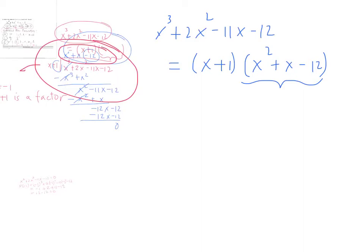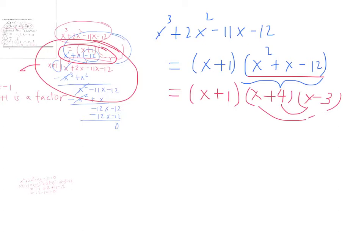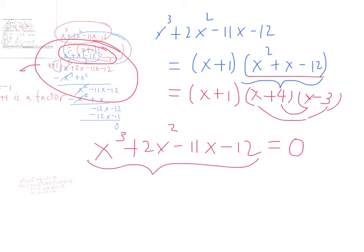Now that we have x cubed plus 2x squared minus 11x minus 12 equal to x plus 1 times x squared plus x minus 12, it's easy to get the other factors. Factoring x squared plus x minus 12: you need 4 and negative 3, giving 4x minus 3x equals positive x, and 4 times negative 3 equals negative 12. So this factors as x plus 4 times x minus 3.